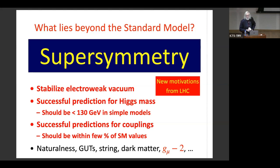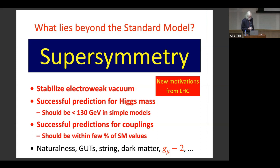Supersymmetry has become a bit unfashionable because it hasn't shown up yet at the LHC or in other experiments. But I'm going to be contrarian and argue that the first round of LHC experiments has actually given us additional reasons for loving supersymmetry: it can stabilize the electroweak vacuum, it made a successful prediction for the Higgs mass, it predicted that the Higgs couplings should look like those in the standard model, it could solve the naturalness problem, it plays a role in grand unification and string theory, could provide dark matter, and could explain the anomaly in the anomalous magnetic moment of the muon.